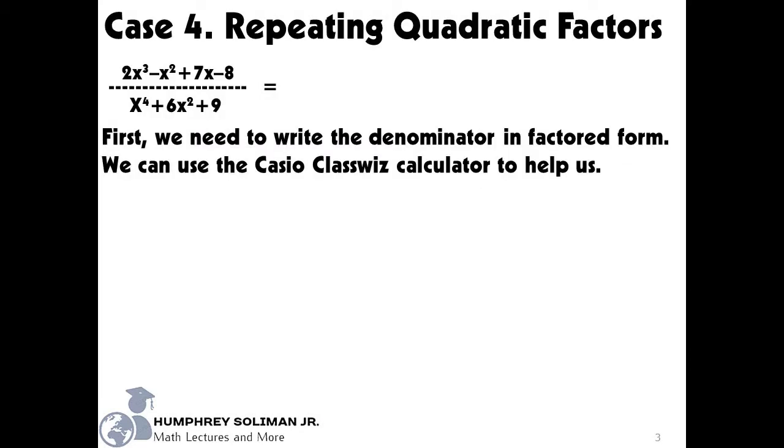Now, let's find the partial fractions for the rational expression: the quantity 2x cubed minus x squared plus 7x minus 8, over the quantity x raised to 4 plus 6x squared plus 9. Our first step is to write the denominator in factored form.